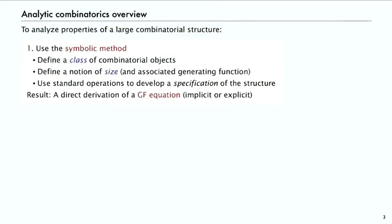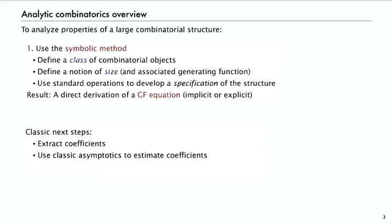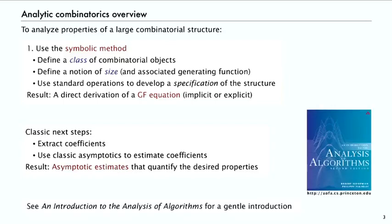The result is, via the symbolic method, a direct derivation of an equation that has to be satisfied by the generating function, either implicit or explicit. Then the classic next steps are to extract coefficients and use classic asymptotics to estimate them and eventually get asymptotic estimates that quantify the desired properties.